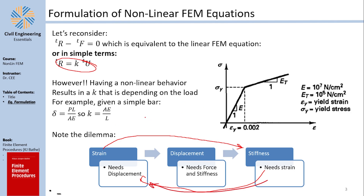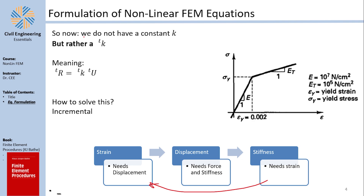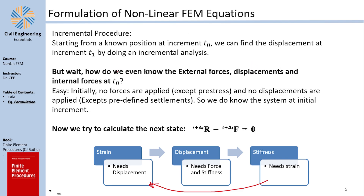To find strain you need to solve the stiffness problem, and to solve the stiffness problem you need the strain. We now have a K that changes with the load increment because we don't know where the displacement will land on the strain curve. You don't know whether you are in the elastic or the tangential region, so the stiffness depends on the displacement, which depends on the stiffness.